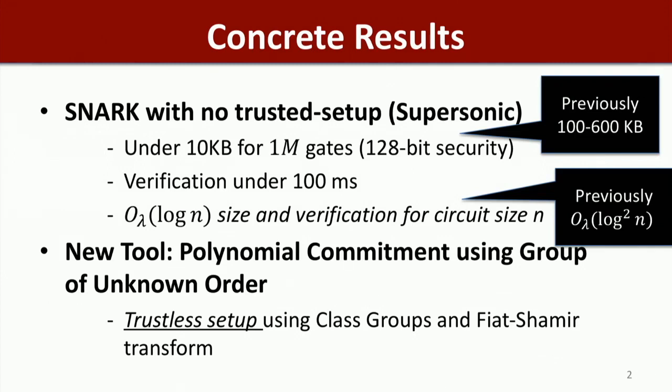We have other types of SNARKs based on FRI, and previously you were seeing SNARKs with no trusted setup in the range of over 100 kilobytes. The most significant thing about this new SNARK is its relatively small proof size. Verification still performs well under 100 milliseconds. Asymptotically, the proof size and verification time are logarithmic in the size of the circuit being proved, with constant factors depending on the security parameter — O(λ). The main new tool is a polynomial commitment scheme using groups of unknown order.